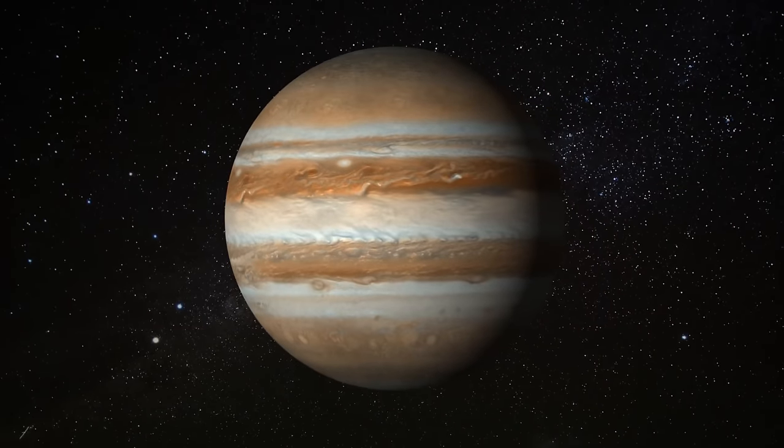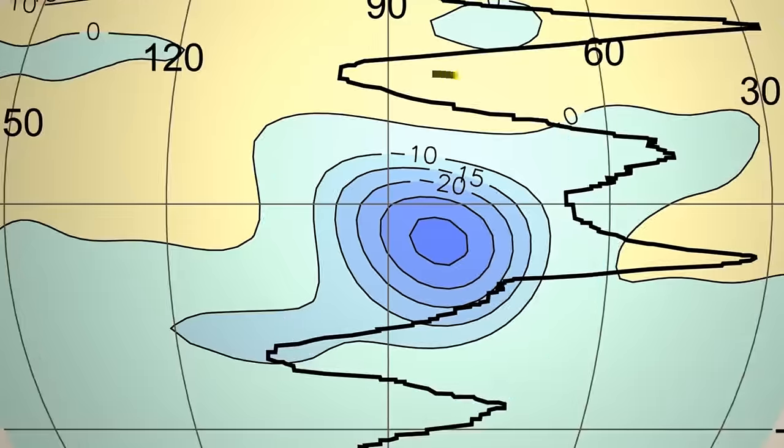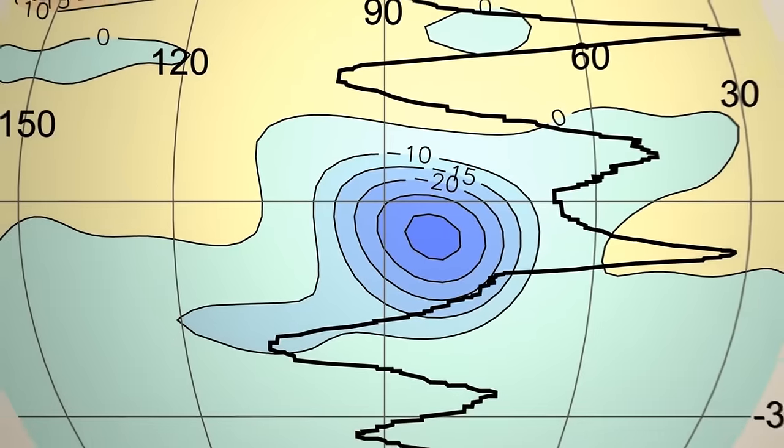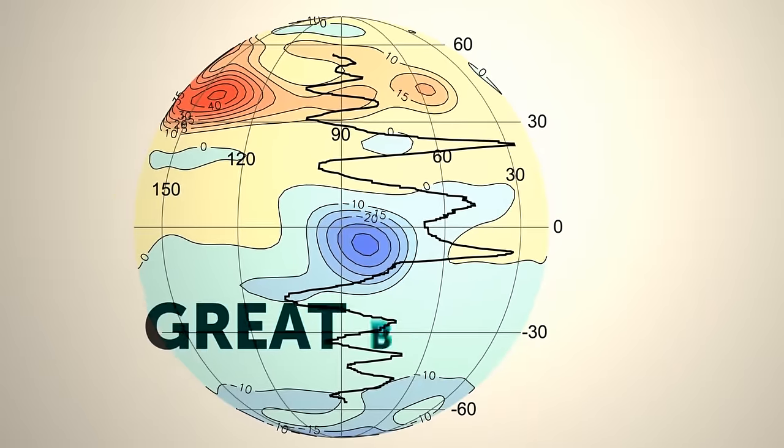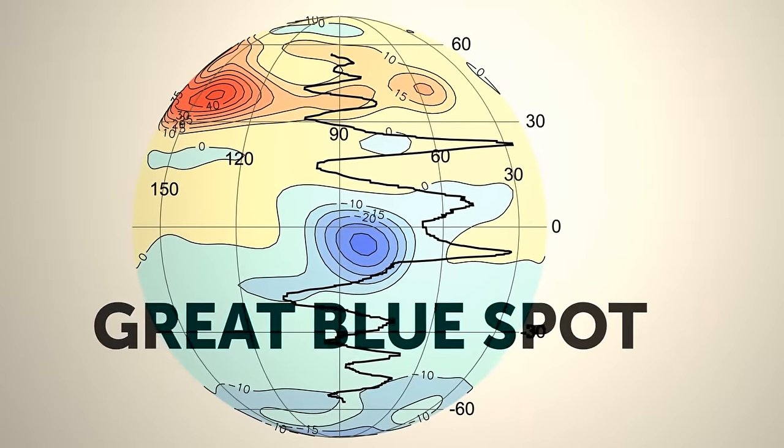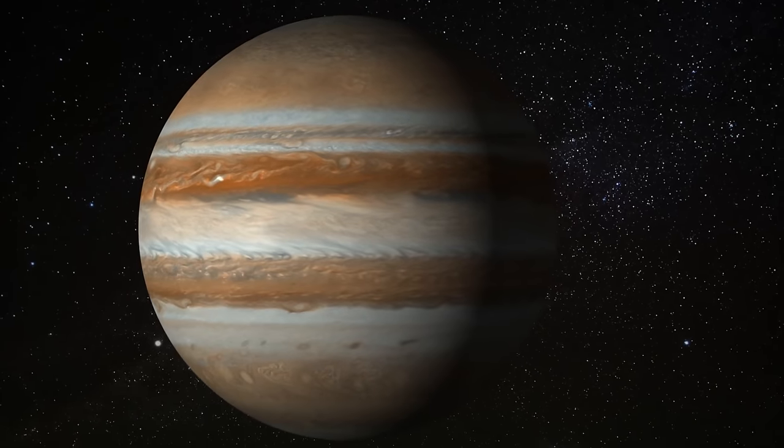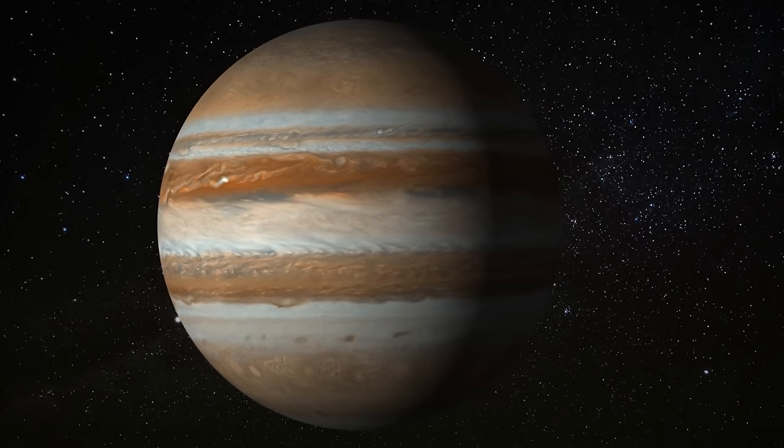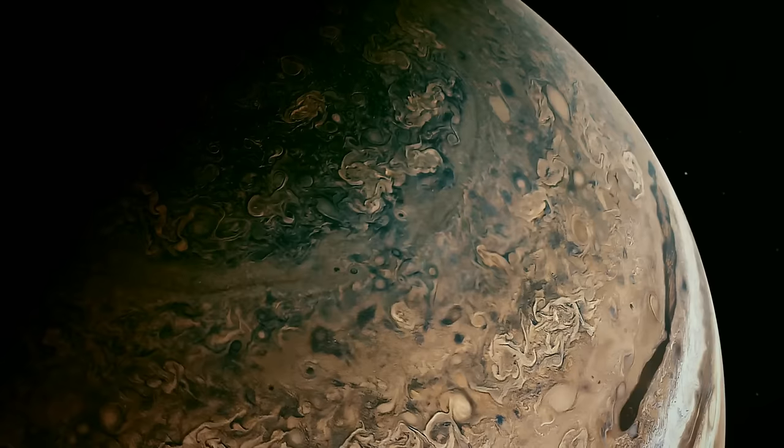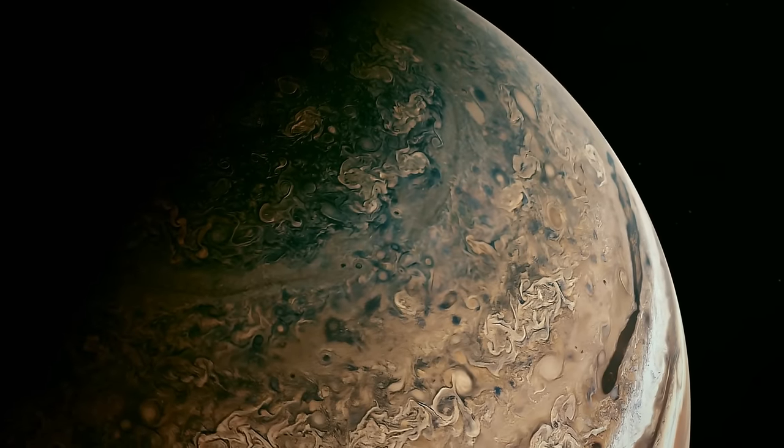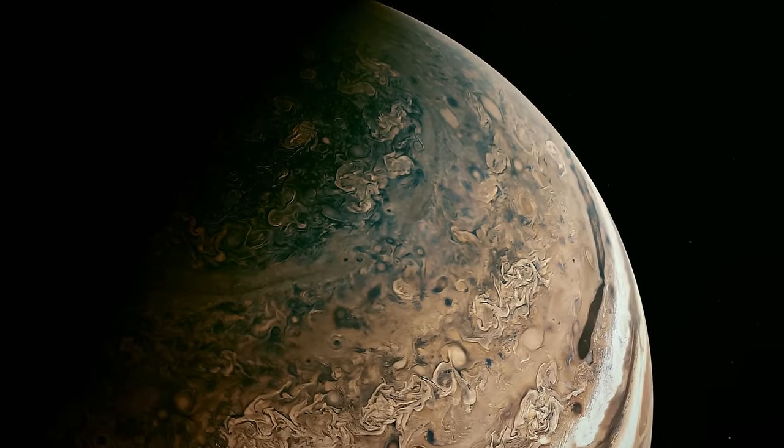Our clever scientists also noticed something special near Jupiter's equator. They discovered a concentrated spot of magnetism called the Great Blue Spot. And guess what? This spot is slowing down, like it's taking a break from its usual fast movement. This suggests that a new type of wavy motion, a new dance, is about to begin.